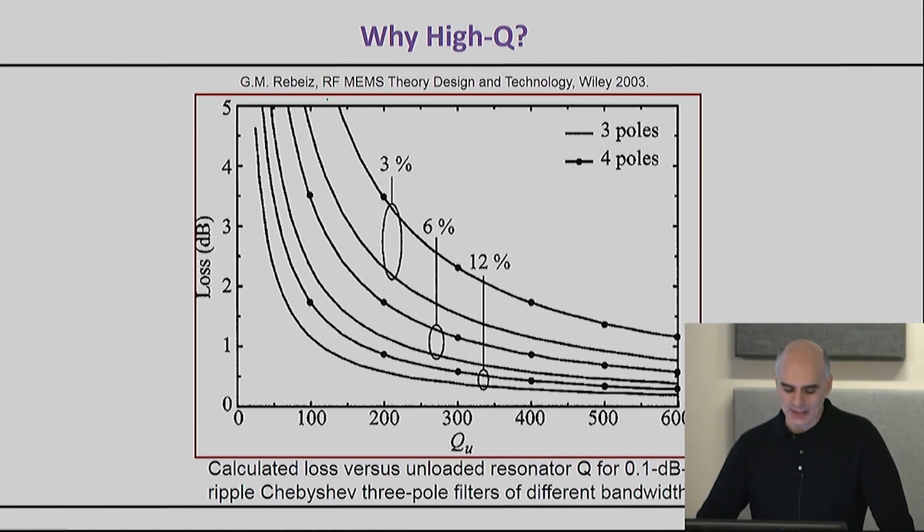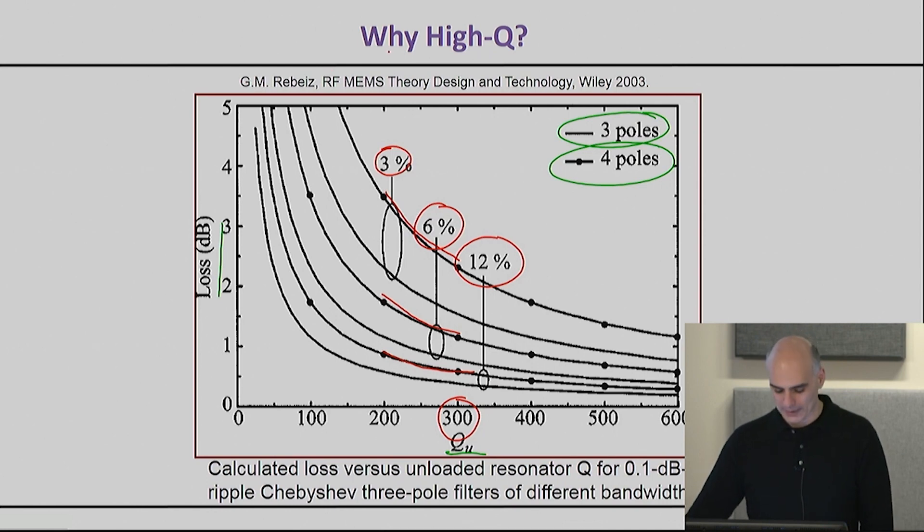This graph here shows exactly the same thing that we discussed so far. It plots the insertion loss of the filter as a function of the unloaded quality factor for a few different cases. You can see there are two sets of lines: one is for a three-pole, the other is for a four-pole. The lines with dots are for the four-pole. You can also see that we're plotting for filters of different bandwidths. Here you can see the dramatic difference that the bandwidth makes in terms of insertion loss. For example, if my unloaded quality factor is 300, the 3% filter is up here, the 6% filter is here, and the 12% filter is here, each one yielding lower loss the more wideband you make the filter.